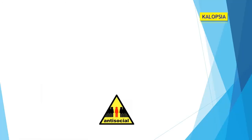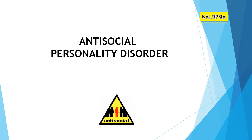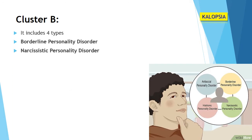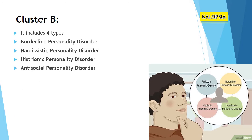Today we are going to discuss the topic of antisocial personality disorder. As we already discussed in the previous video about Cluster B, it has four types: borderline personality disorder, narcissistic personality disorder, histrionic personality disorder, and antisocial personality disorder.